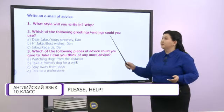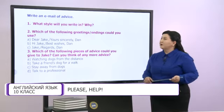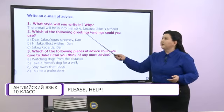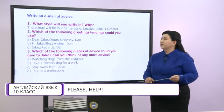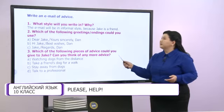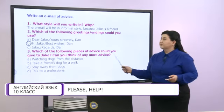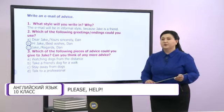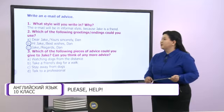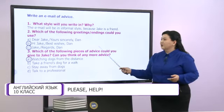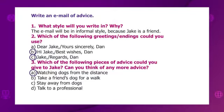Before we write, let's think about these questions. Number one: what style will you write in and why? The email will be in informal style because Jake is a friend. Number two: which of the following greetings and endings could you use? Number three: which of the following pieces of advice could you give to Jake? Can you think of any more? We can say watching dogs from a distance is good advice.